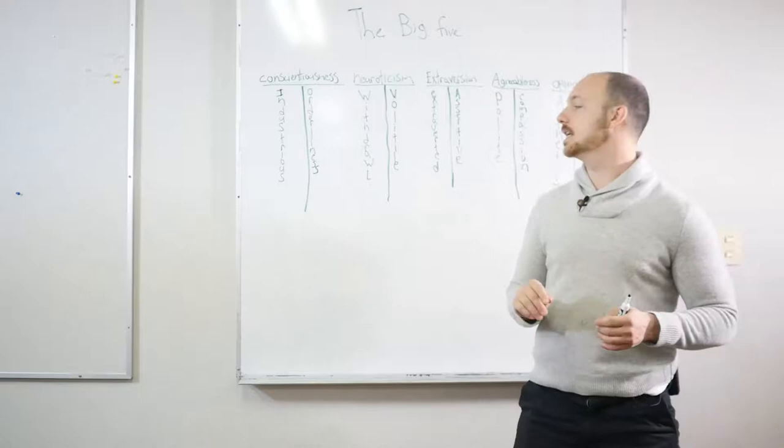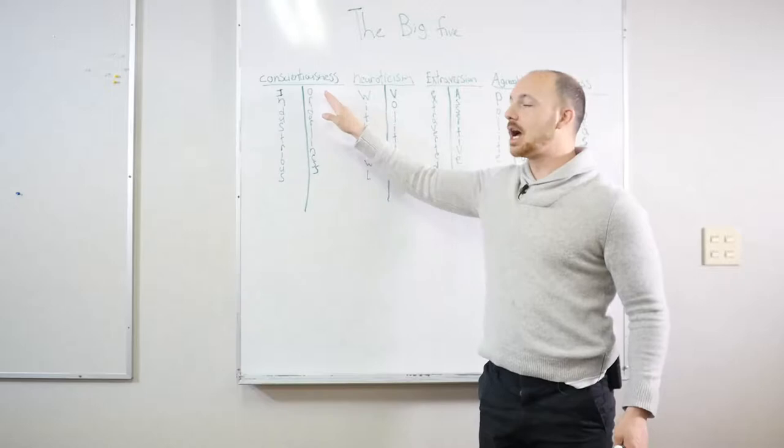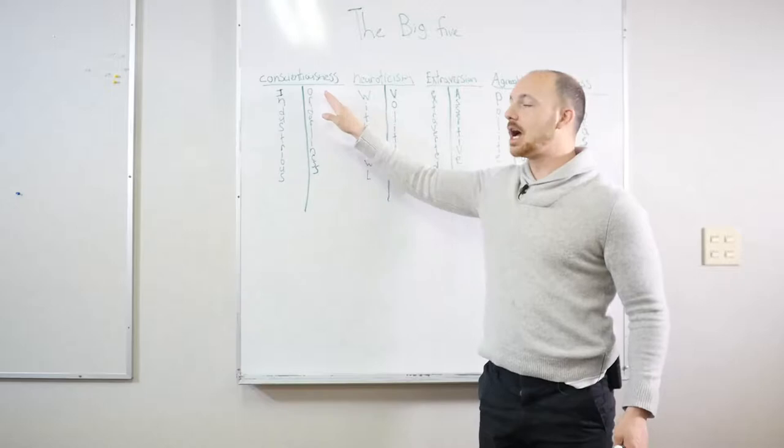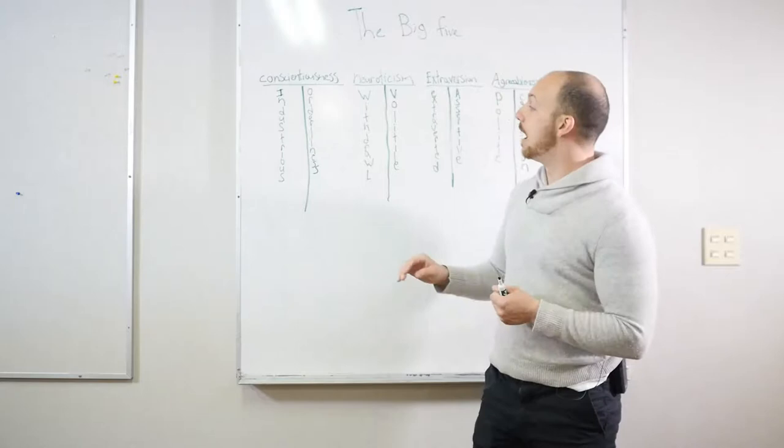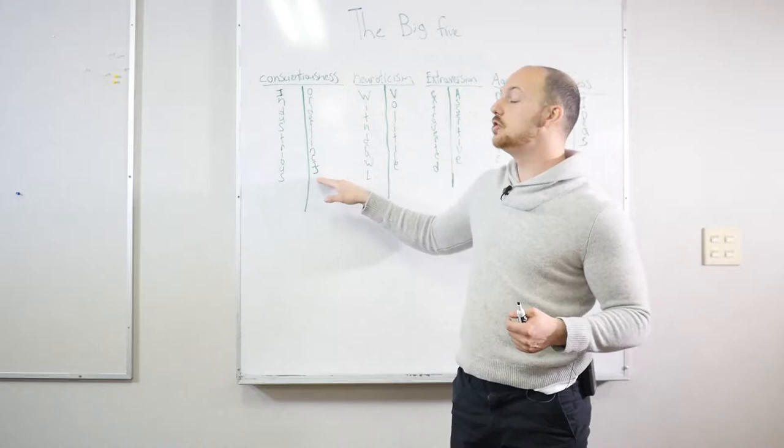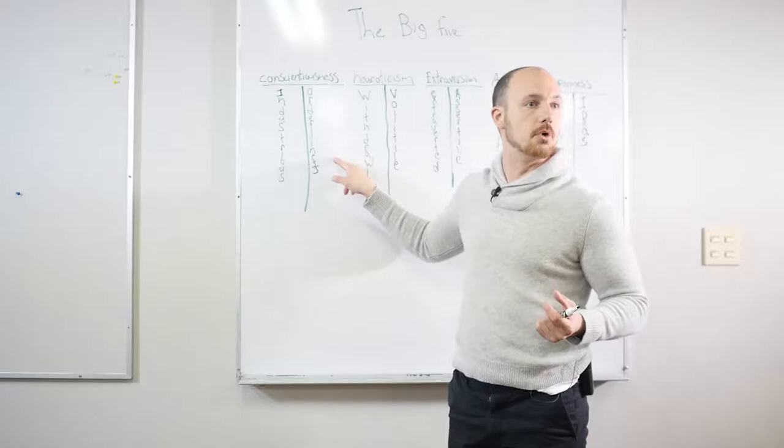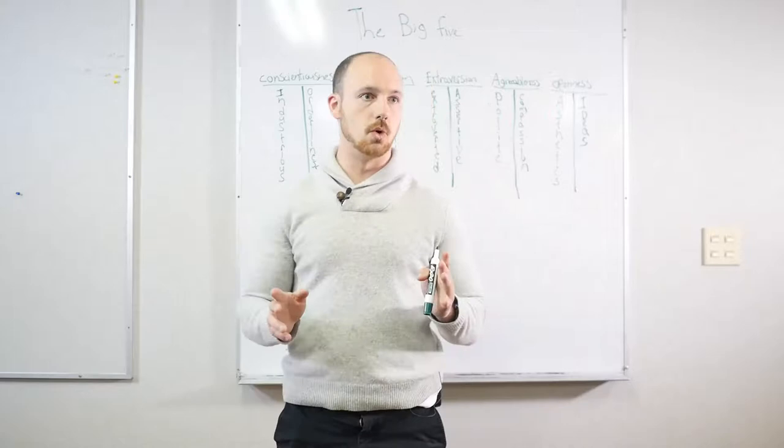The best use of this test, in my opinion, meaning what it predicts the best is who's going to be your friend, who are you going to be successful with in a romantic relationship. Because here's the thing, there's that saying opposites attract, right? And that is true to an extent unless you're too opposite. If someone's really high in conscientiousness like 99th percentile and someone's really low in conscientiousness like first percentile, that's too different. There's going to be constant clashing going on between you guys.